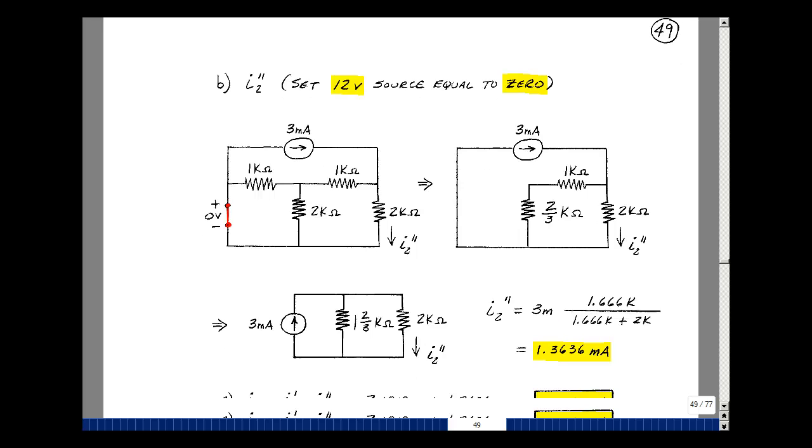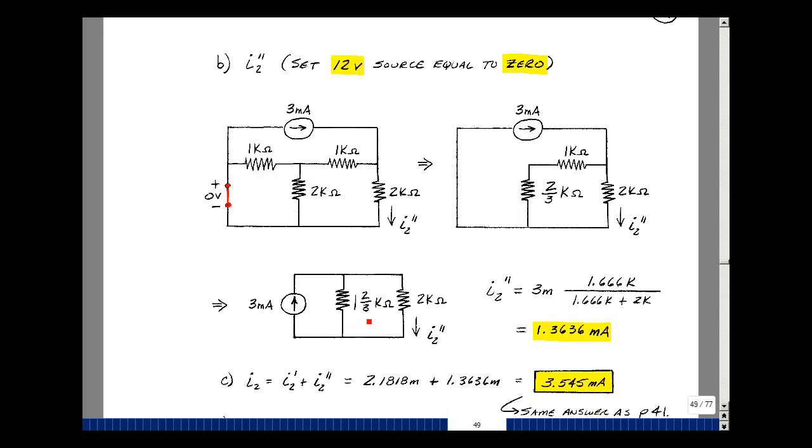I can combine that in series as a 1K plus a 2 thirds K resistor, and then I've got this 3 milliamps. Let's find the current and use the resistive form of the current divider. If I want the current in this resistance, I'll take the other resistance, which is 1.666K, over that plus 2K, times the 3 milliamps. That turns out to be 1.3636 milliamps.